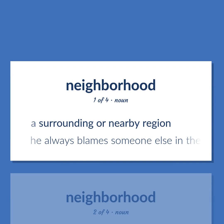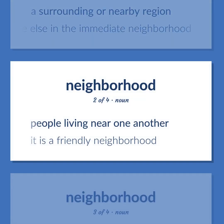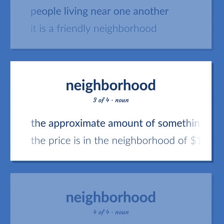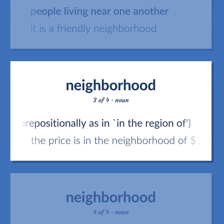Neighborhood: a surrounding or nearby region. He always blames someone else in the immediate neighborhood. People living near one another — it is a friendly neighborhood. The approximate amount of something, usually used prepositionally as in 'in the region of' — the price is in the neighborhood of $100.